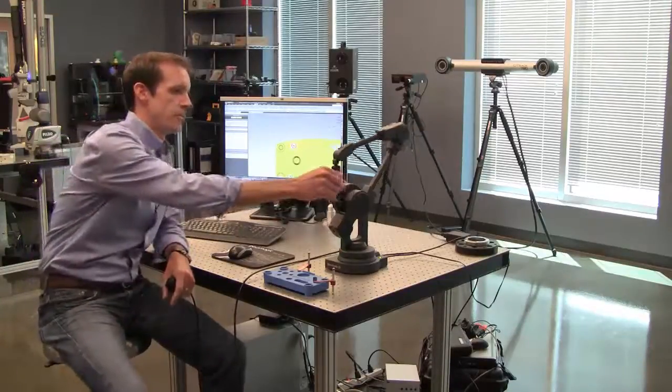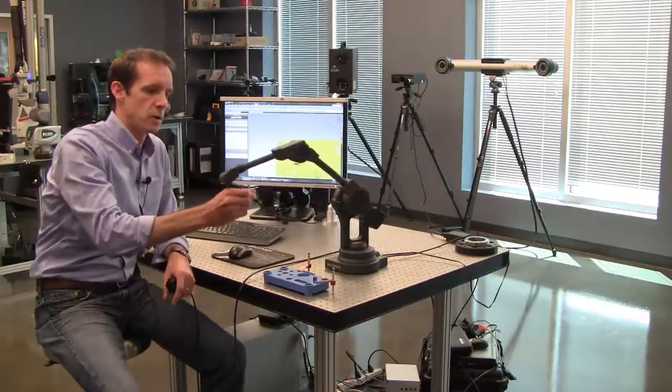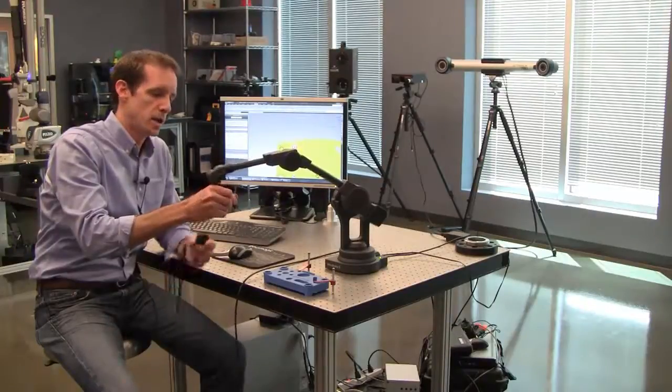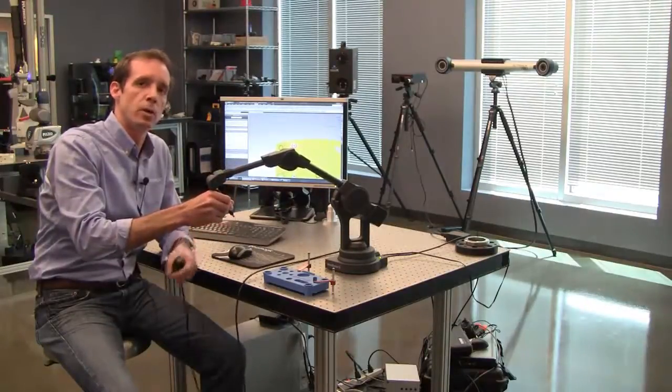So here we'll take the arm, and you'll see it's a six-axis arm with removable tips. Here we've got a six-millimeter ruby tip. You've also got an actual sharp point that can be used if you don't want to have to compensate.